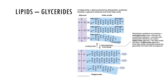Glycerides, like a triglyceride, are lipids produced by dehydration synthesis between a glycerol molecule and fatty acids. One glycerol plus one fatty acid is a monoglyceride; plus two is a diglyceride; plus three is a triglyceride. Glycerides mainly function in energy storage, insulation, and protection in the body.